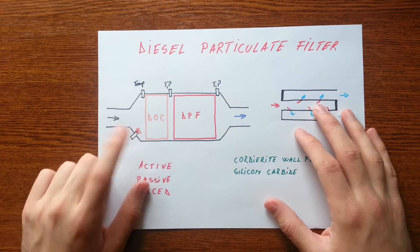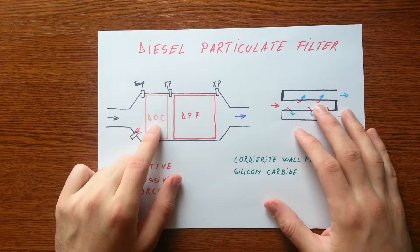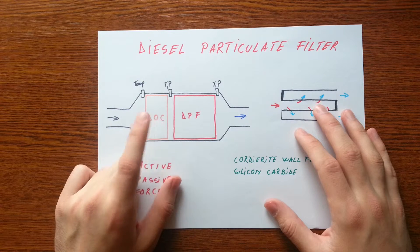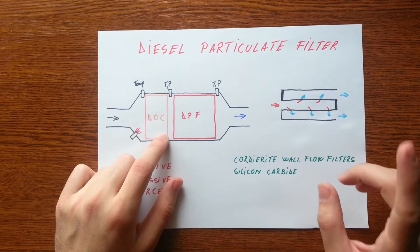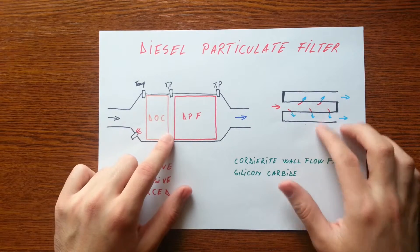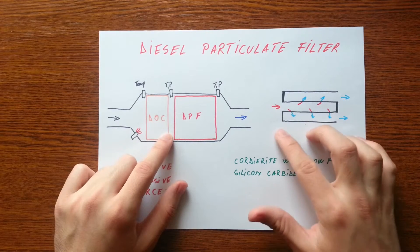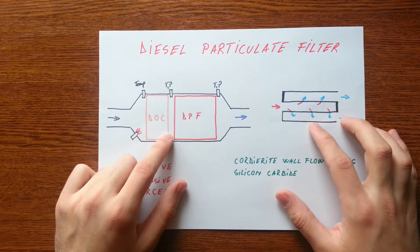DPF is not a flow-through device like a catalytic converter. The channels of the filter are blocked, forcing the gases to go through the filter.